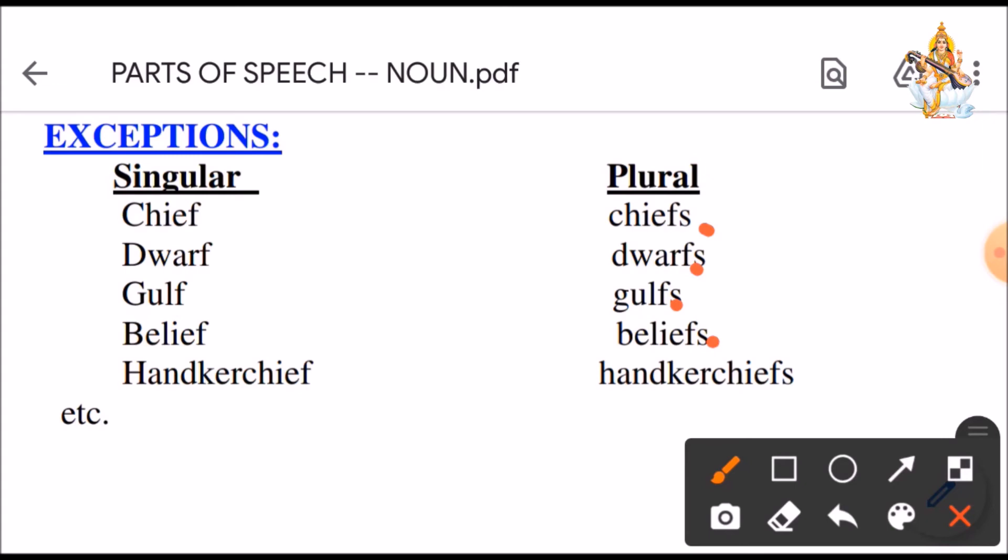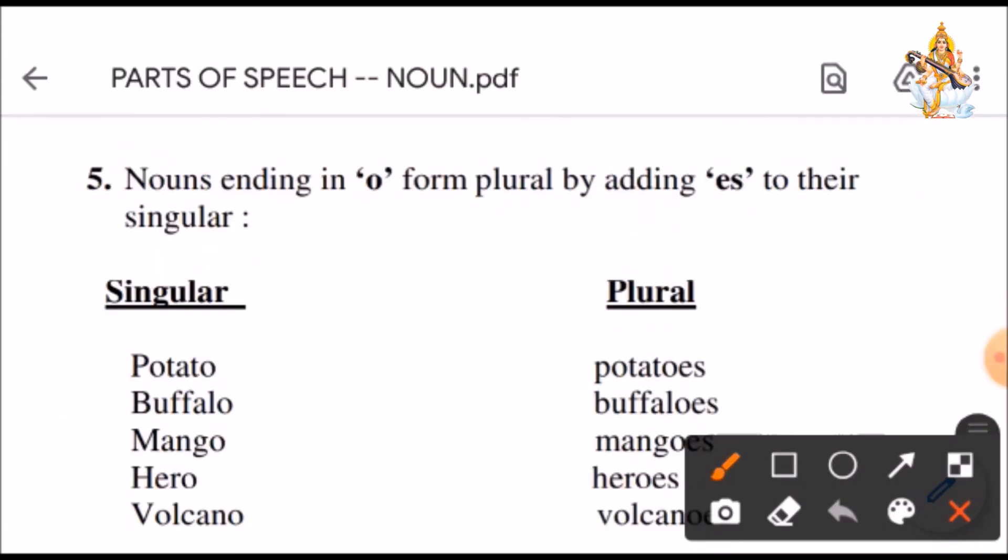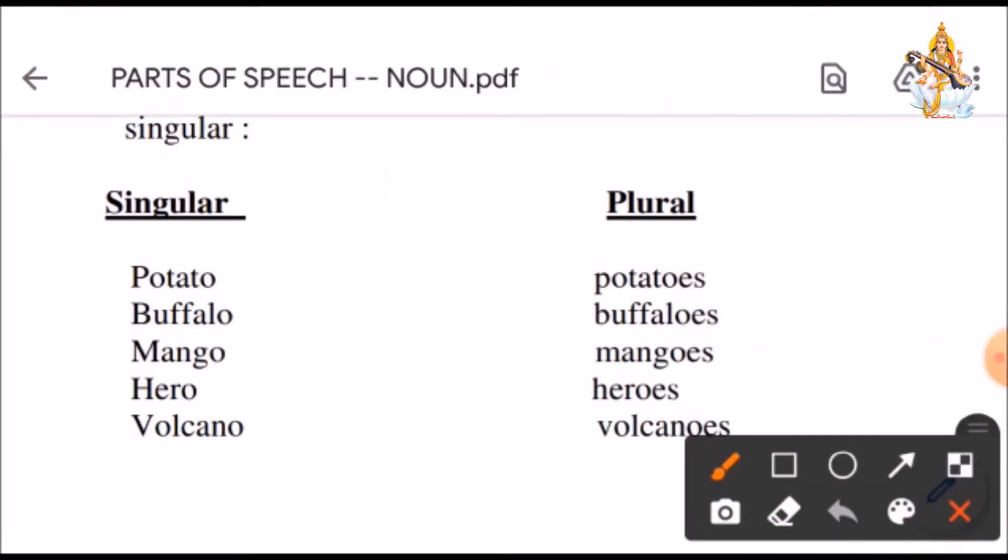Another rule you should keep in mind is nouns ending in O form plural by adding ES to their singular. See, we have words potato, buffalo, mango, hero, volcano all end in O. We have to add ES to them. So, potato becomes potatoes, buffalo becomes buffaloes, mango, mangoes, hero, heroes and volcano, volcanoes.